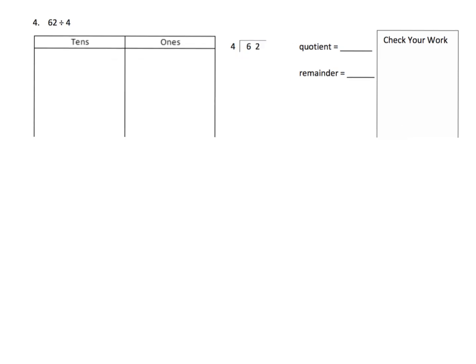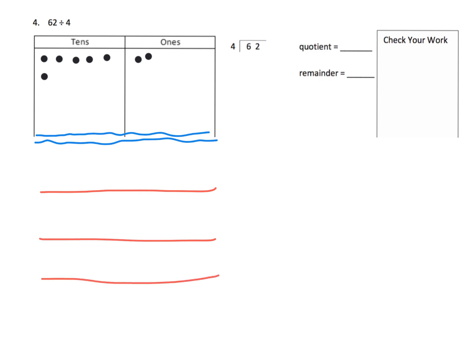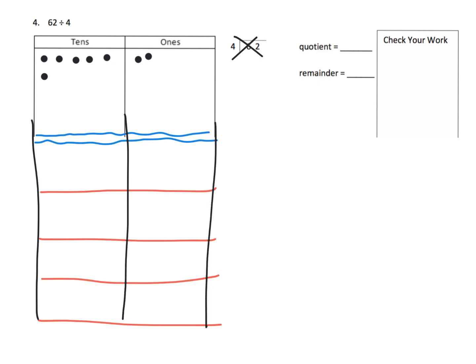Now we have 62 divided by 4. Modeling: 1, 2, 3, 4, 5, 6 for our 60, and 1, 2 for our 2 ones — there's our 62. We need four groups, so we write 62 divided by 4 down here. Teachers, I'm leaving a big gap because we're going to be doing some decomposing and we need space.